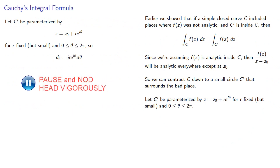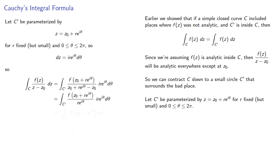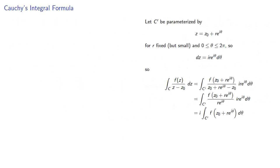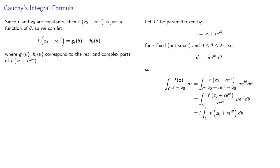Since r and z0 are constants, then f of z0 plus r e to the i theta is just a function of theta. So we can rewrite our function as where g_r theta and h_r theta correspond to the real and complex parts of our function, and they are functions of theta only.